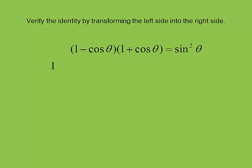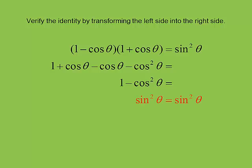Here we've got another one, and our best choice is to FOIL. We FOIL and get 1 plus cosine minus cosine minus cosine squared. This is the difference of squares — we could have just written 1 minus cosine squared. The cosines cancel out, leaving 1 minus cosine squared. And 1 minus cosine squared equals sine squared. So we have sine squared equals sine squared. You always finish by showing the left side looks just like the right side.